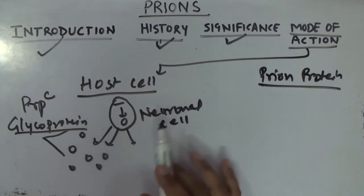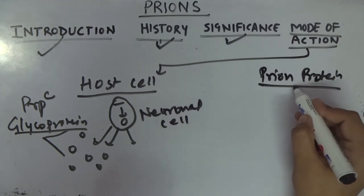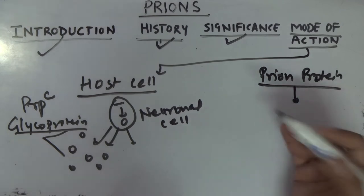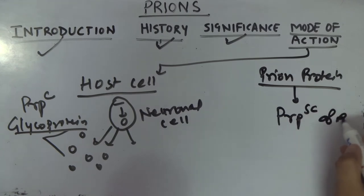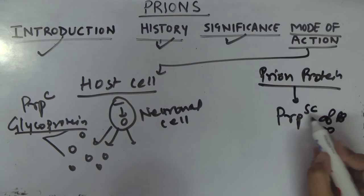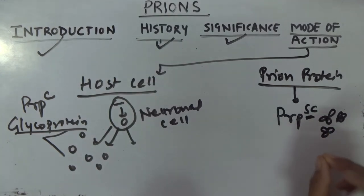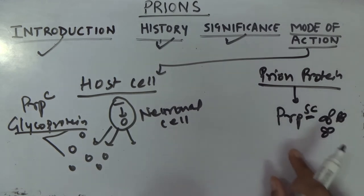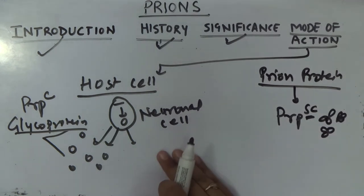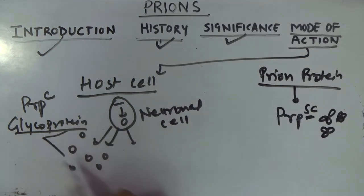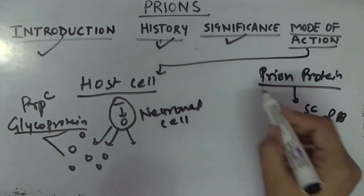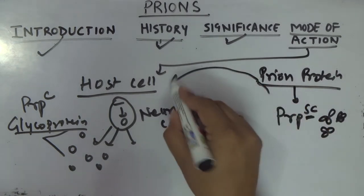Prions, of course, are already a protein. The prion protein is referred to as PrPSc — the 'Sc' is taken from scrapie, the prion protein responsible for causing scrapie. But remember, most prions work in the same way — they all affect neuronal functions.